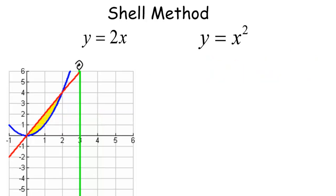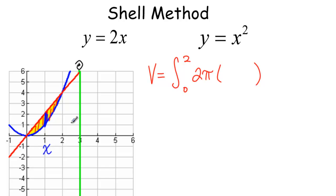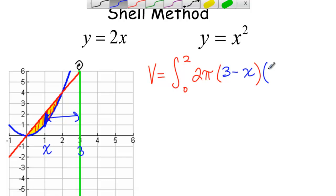For the last example, let's find the same volume using the shell method. We cut parallel to the axis, giving vertical rectangles. Volume equals the integral from 0 to 2 of 2π times the radius. The radius is the distance from the slice at x to the axis at 3 — a horizontal distance, so right minus left: 3 minus x. Times the height of the rectangle: 2x minus x squared, dx.